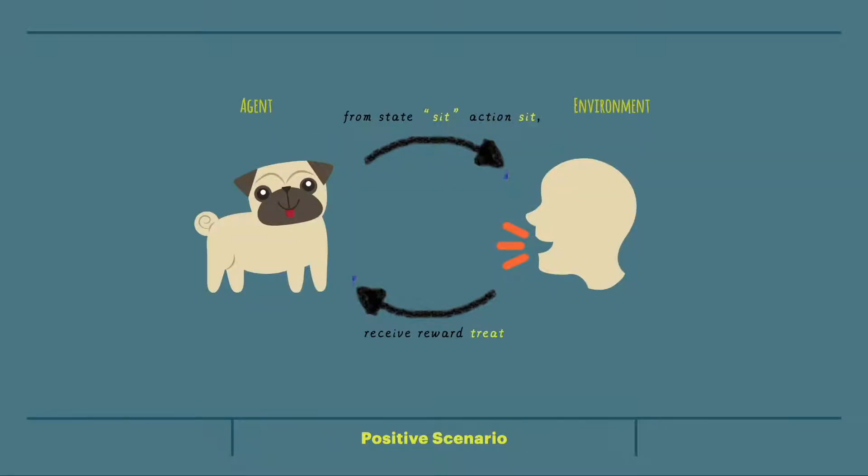The best way to demonstrate this is through an example. If we want to train our dog to sit, we give the command, the dog sits, and we give it a treat. In this loop, there are three things going on.